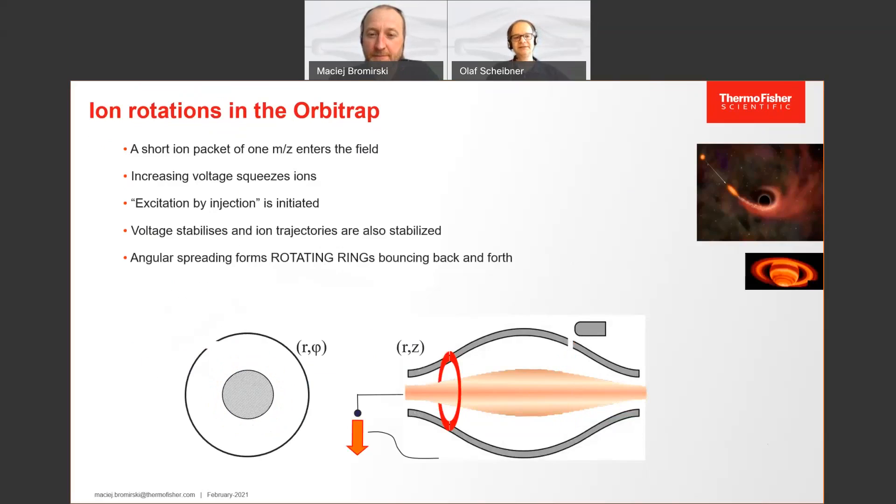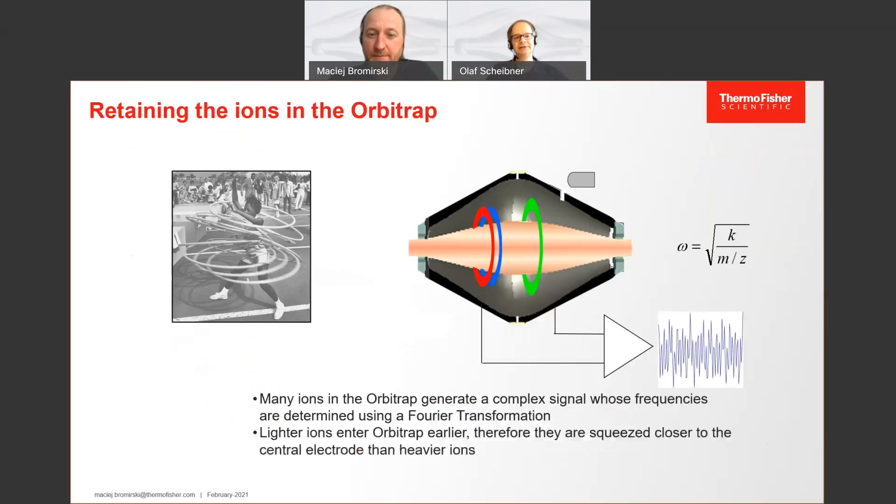But it doesn't stay that easy because, of course, we have many ions, not only three as shown here. We have hundreds and thousands of different ions entering the device and spinning there. But they do us a favor, they all spin in their own orbit around the center electrode. So they have different distance from the center electrode. And even if they move against each other, they do this at different distance. So they don't collide and we don't have a collision cell here. So we can detect that.